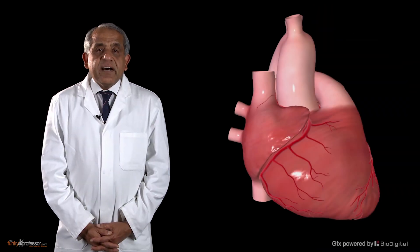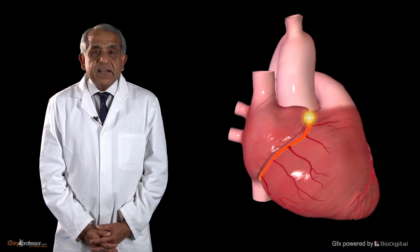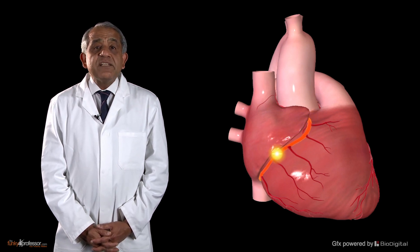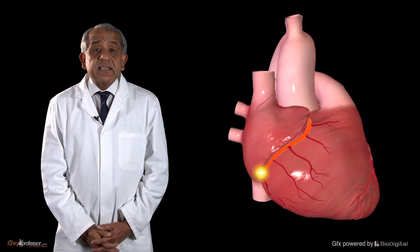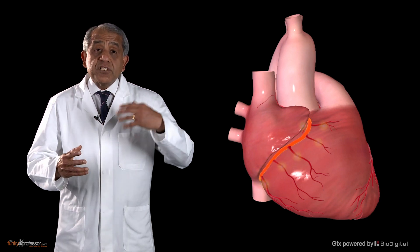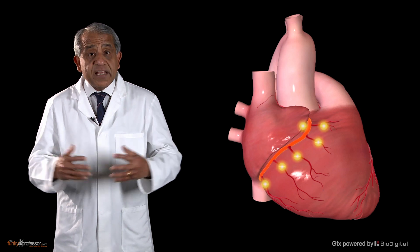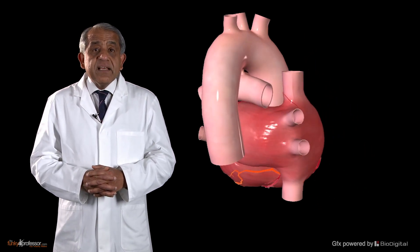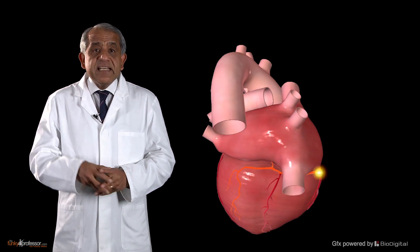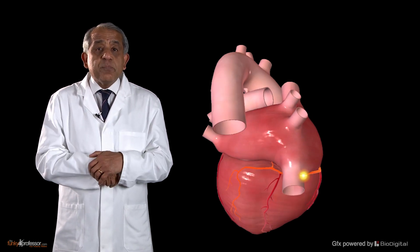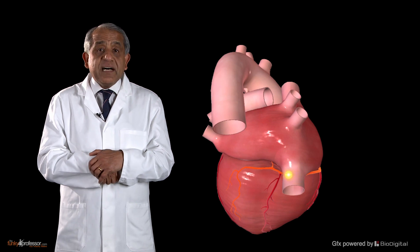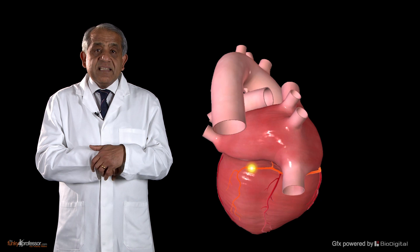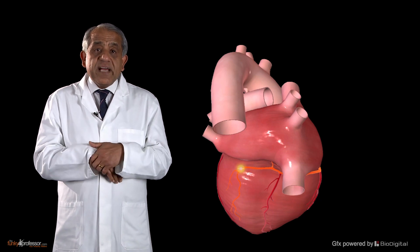The right coronary artery runs down the anterior surface of the heart in the atrioventricular sulcus, giving off numerous branches to the right atrium and to the right ventricle. On reaching the lower aspect of this surface it turns from front to back at the inferior margin of the heart and continues to run in the atrioventricular sulcus.